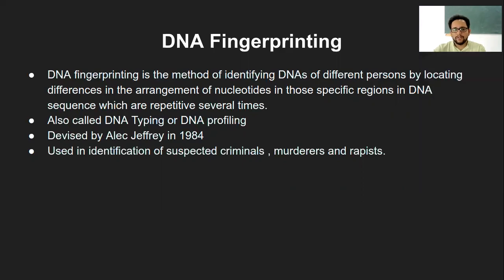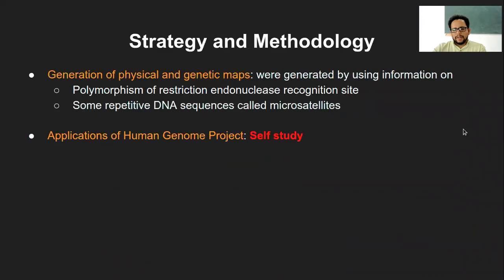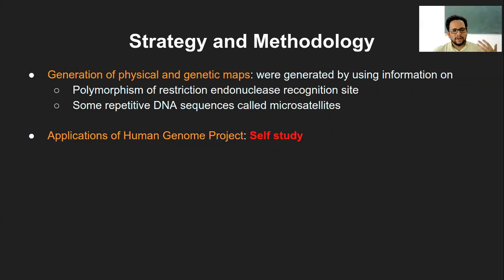Applications of the Human Genome Project include identification of diseases, identifying genetic mutations, and studying the function of particular genes — such as over-expression or under-expression. These applications can be explored as self-study.